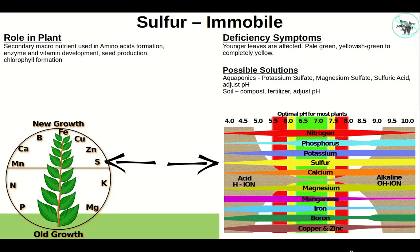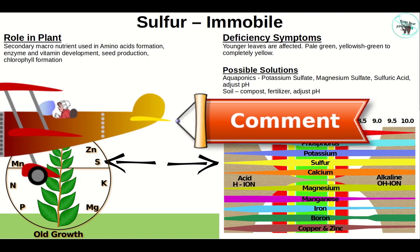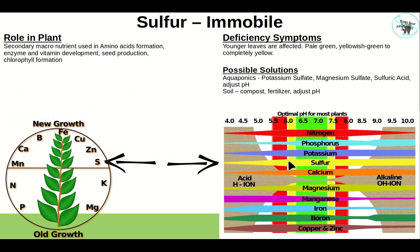Sulfur is an immobile secondary nutrient used in amino acid formation, enzymes, vitamin development, seed production, and chlorophyll formation. Because it's immobile, younger leaves are affected first, appearing pale green, yellowish-green, to completely yellow. In aquaponics: potassium sulfate, magnesium sulfate, Epsom salt, sulfuric acid, and adjust pH. In soil: compost, fertilizer, potassium sulfate, magnesium sulfate, and adjust pH. Anything below pH 6 reduces sulfur availability.